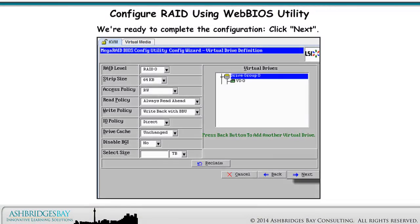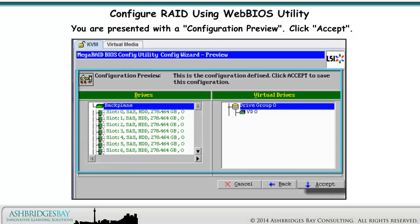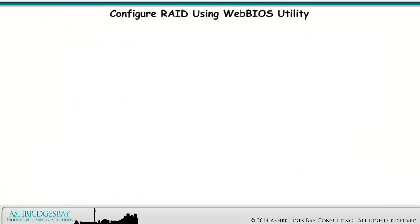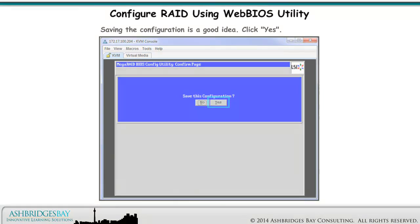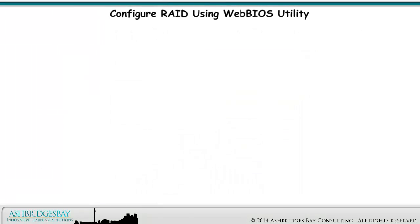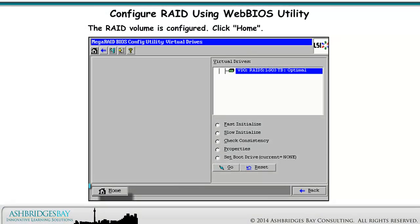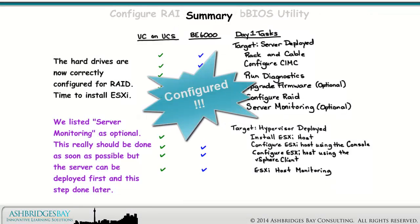We're ready to complete the configuration. Click Next. You are presented with a configuration preview. Click Accept. Saving the configuration is a good idea. Click Yes. The initialization is normally very fast, but sometimes can take 45 minutes, or maybe a little longer. The RAID volume is configured. Click Home. The hard drives are now correctly configured for RAID.